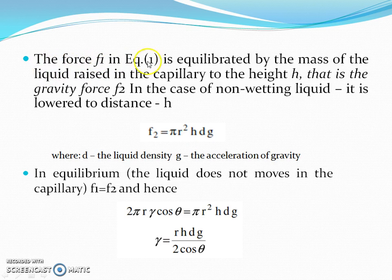The force F1 in the equation is equilibrated by the mass of the liquid rising in the capillary to the height h. That is the gravity force F2. In the case of non-wetting liquid, it is lowered to distance h. F2 equals πr²hρg, where ρ is the liquid density and g is the acceleration of gravity.